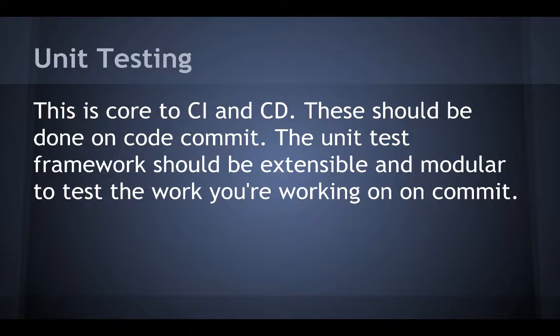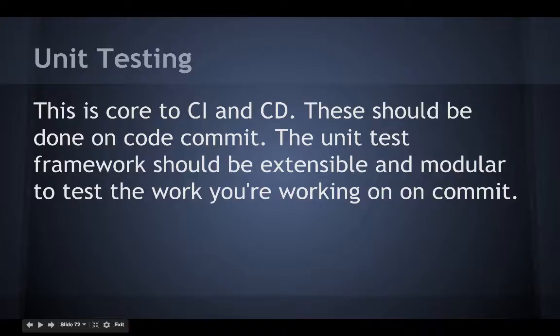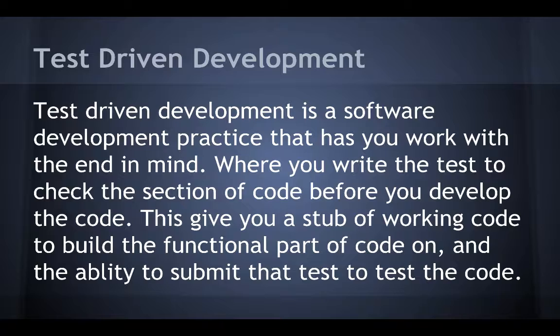Unit testing is the core of CI and CD and should be done on code commit. The unit test framework should be extensible and modular to test the work you're working on. Test-Driven Development is the cornerstone of automated testing. This practice is what enables a framework to build the CI and CD pipeline on. TDD is a software development practice where you write the test to check the section of code before you develop the code further.